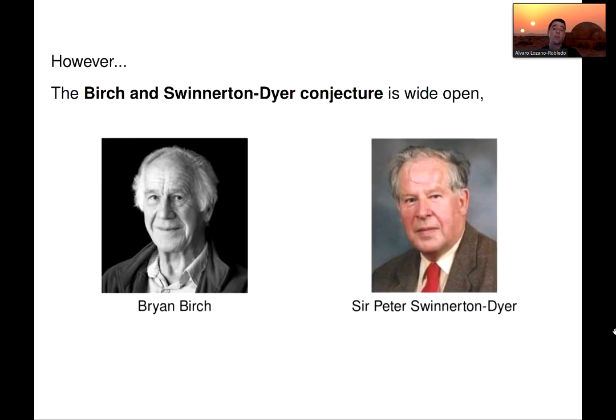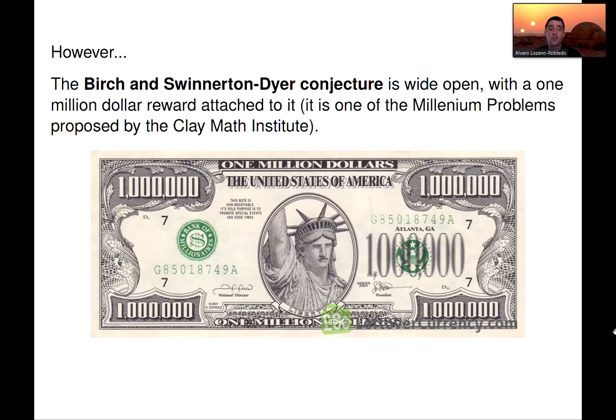And the Birch and Swinnerton-Dyer conjecture is wide open. We do not know. It's not been proved. It's been proved in some cases, but there is still a lot to be done to actually prove this conjecture, so much so that it is one of the millennium problems proposed by the Clay Math Institute, so there is a million-dollar reward for solving the Birch and Swinnerton-Dyer conjecture, which would settle at least one possible classification of congruent numbers.